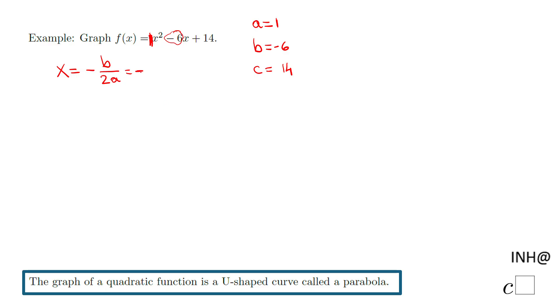In this case we have negative b, negative negative 6, over 2a, 2 times 1. I put a parenthesis here just to show this substitution and we have positive 6 over 2 and that will be 3.